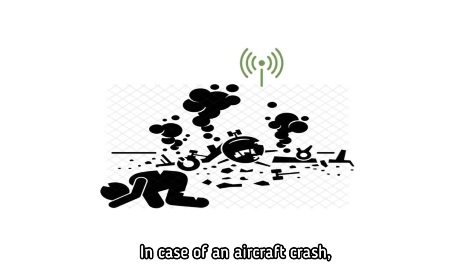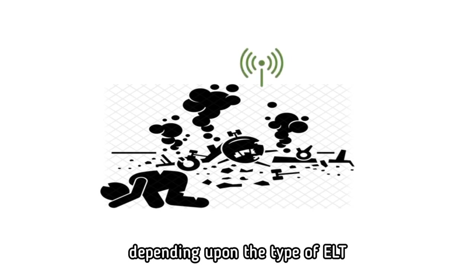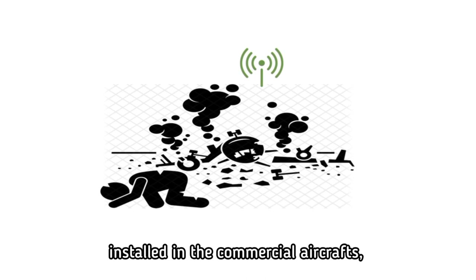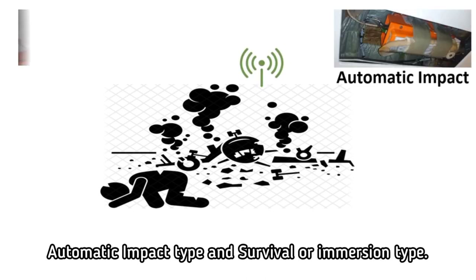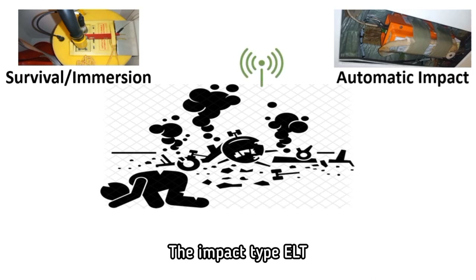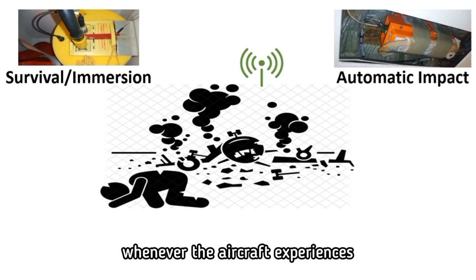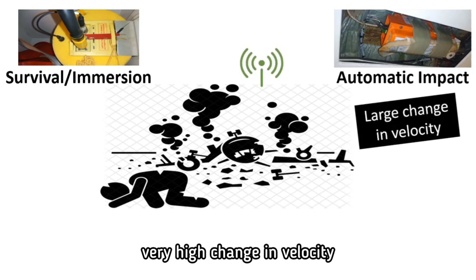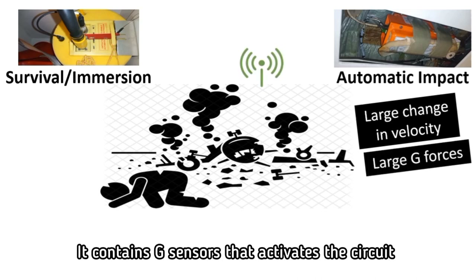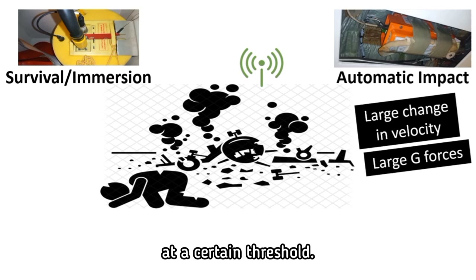In case of an aircraft crash, the ELT is activated depending upon the type of ELT installed in the aircraft. There are generally two types of ELTs installed in the commercial aircraft: automatic impact type and survival or emergent type. The impact type ELT is automatically activated whenever the aircraft experiences very high velocity or large g-forces due to crash. It contains g-sensors that activate the circuit at a certain threshold.